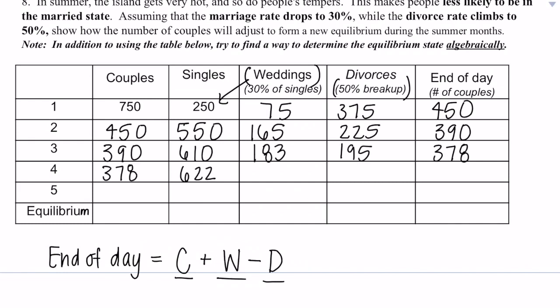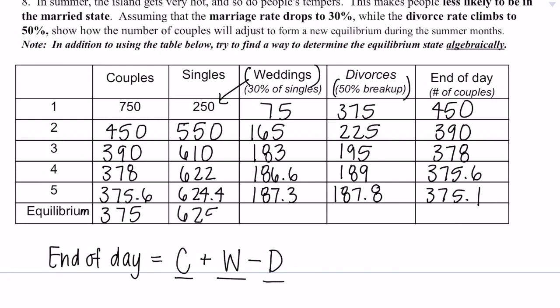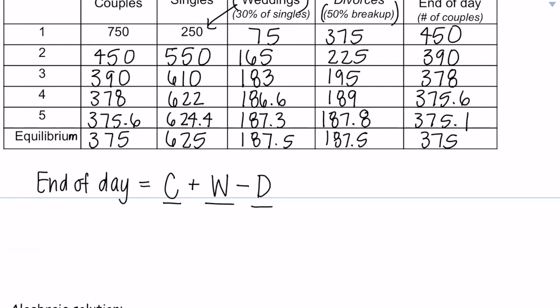Okay. And for the equilibrium, I will round this to 375. So that is our final equilibrium. It will always now remain at 375 couples, 625 singles, because the number of weddings, weddings equals divorces.